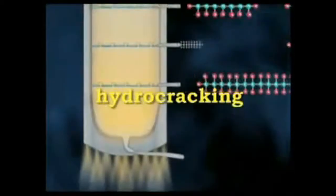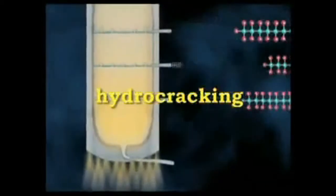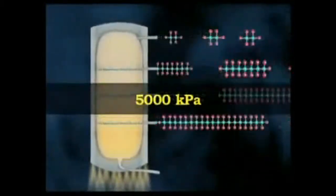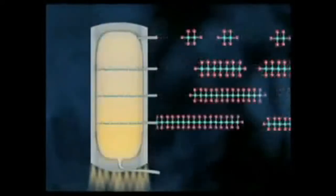In hydrocracking, crude oil is heated at very high pressure, usually around 5000 kilopascals, in the presence of hydrogen, with a metallic catalyst such as platinum, nickel or palladium.